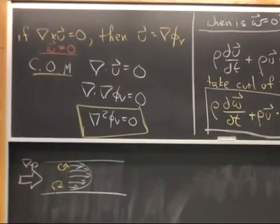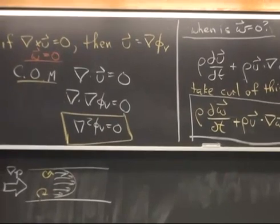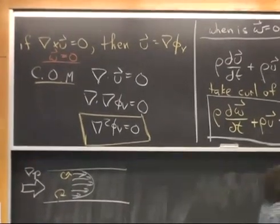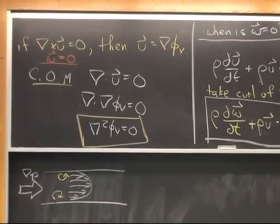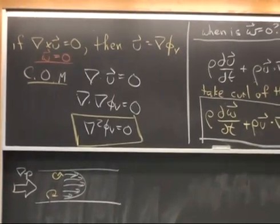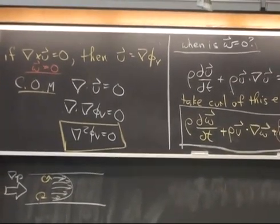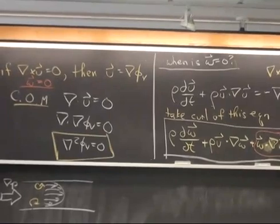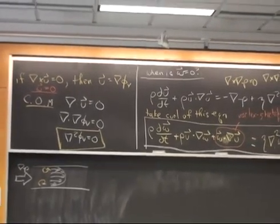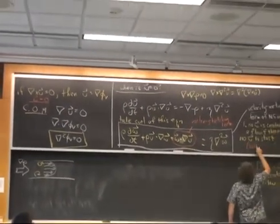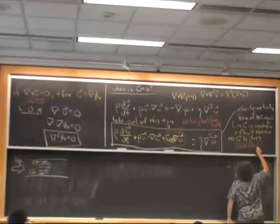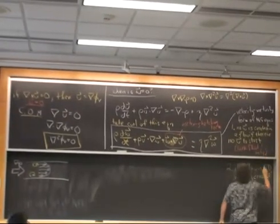So these conclusions, no omega is created in a flow if there is no omega to start. This applies to the bulk fluid only.